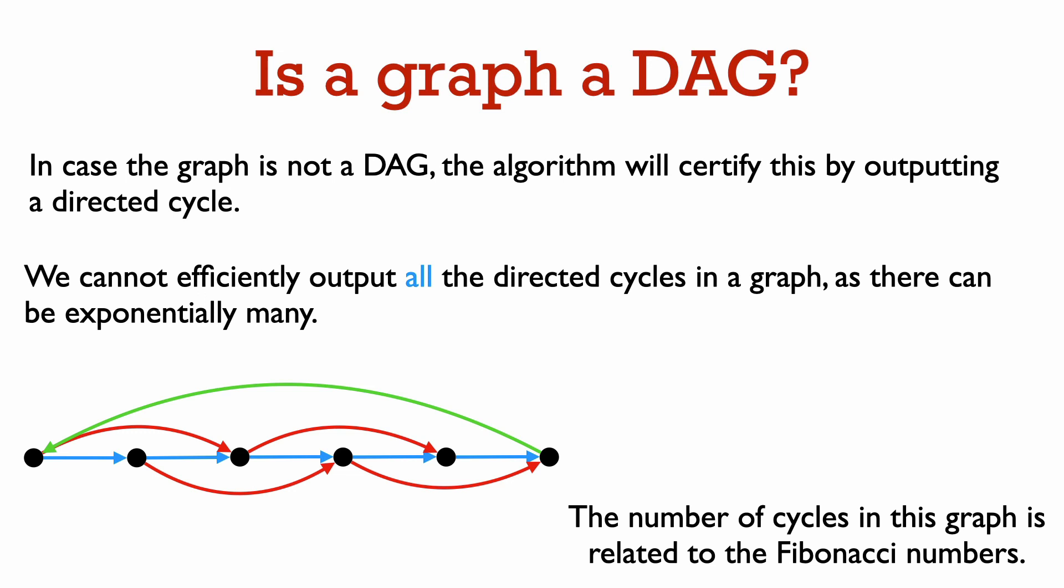The number of paths from the first vertex on the left to the last vertex on the right in this graph is actually given by the Fibonacci numbers when you look at this graph on n vertices. So thus the number of cycles in this graph is going to be exponential in the number of vertices.